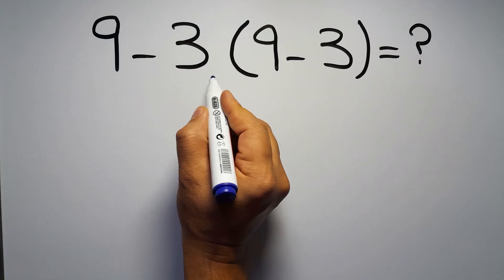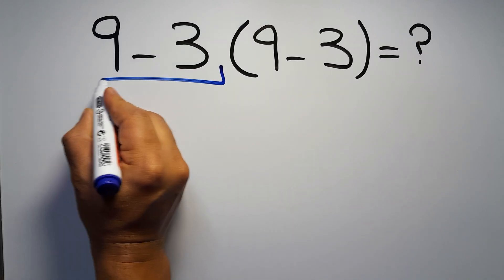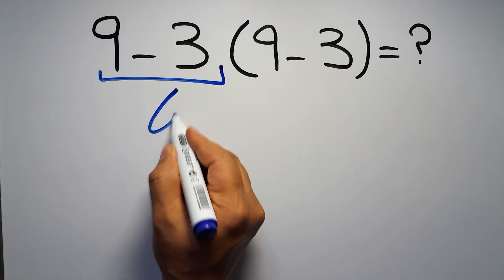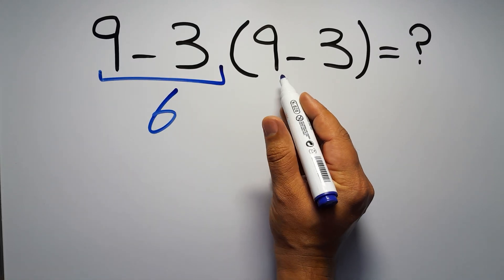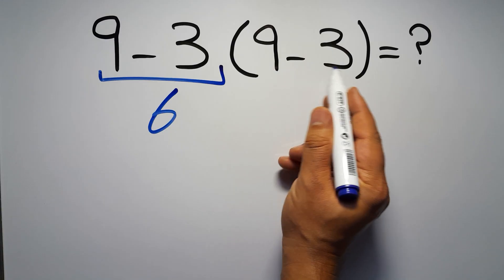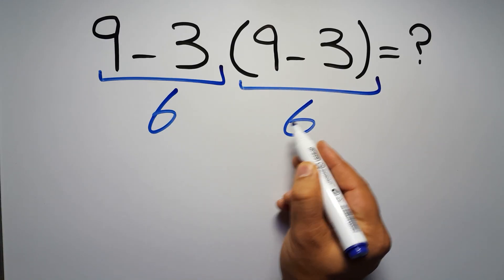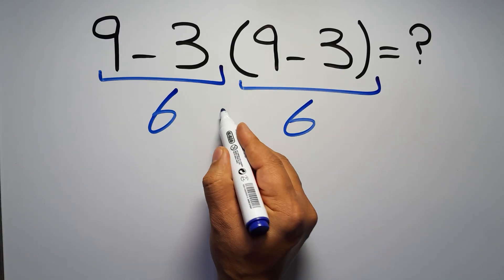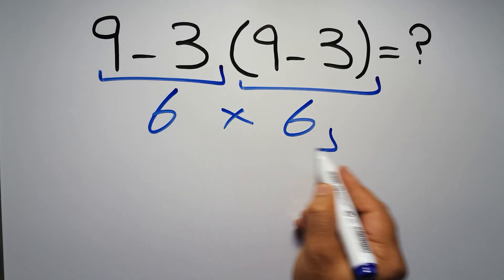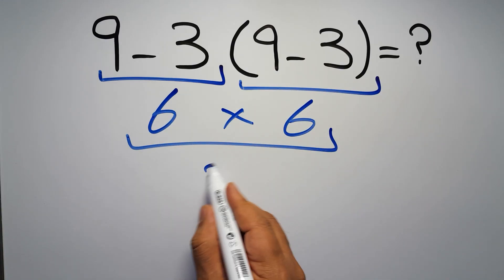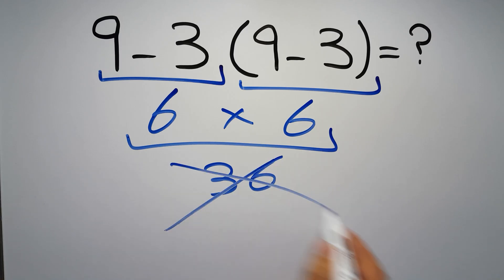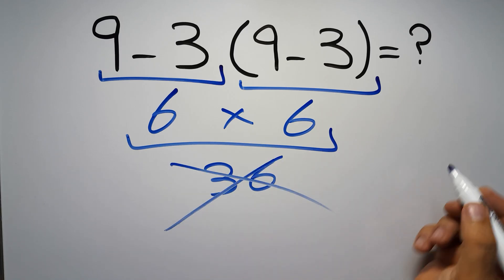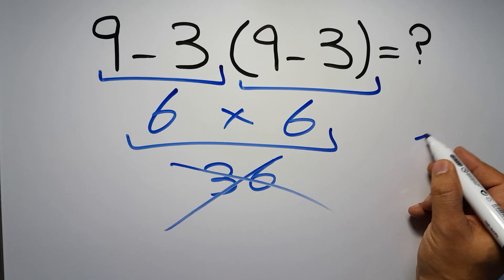9 minus 3 equals 6, and again here inside this parentheses we have 9 minus 3, so 6 times 6 which equals 36. But this answer is not correct because according to the order of operations, first we have to follow the correct sequence.